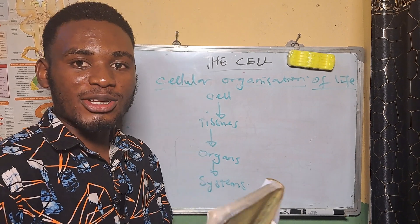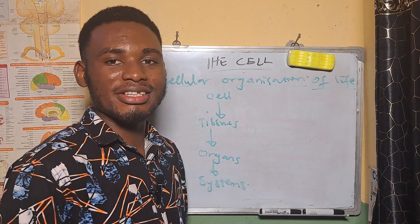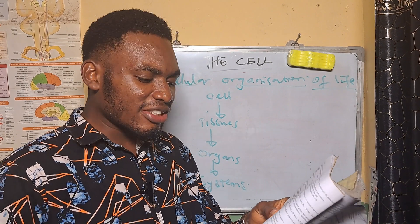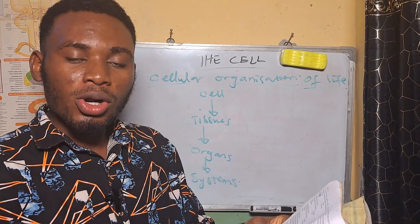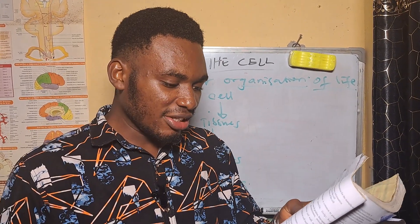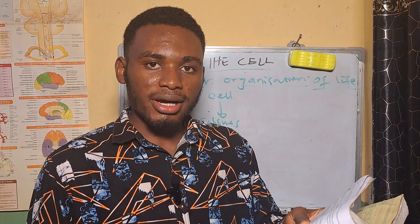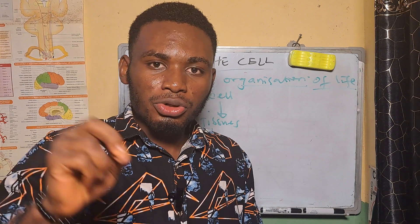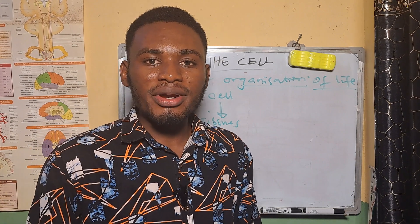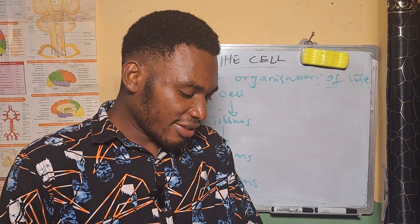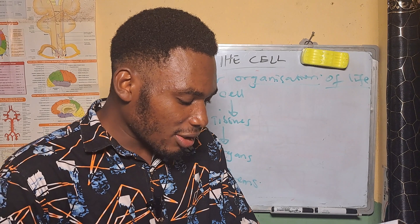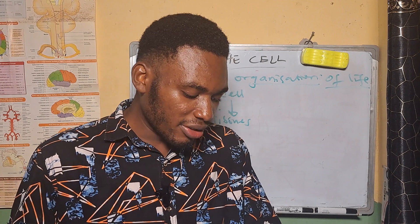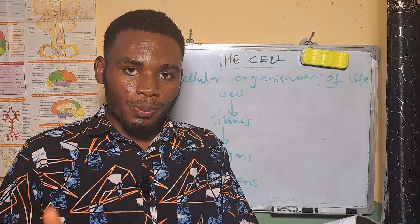We'll now solve some JAMB past questions to test what we covered in this tutorial. A 2009 question says: 'In a cell, the genes are carried by: A) nuclear membrane, B) lysosome, C) chromatin thread, D) mitochondria.' The answer is the chromatin thread, because the chromatin thread is found in the nucleus, and the nucleus carries the genetic material of a cell. Another question says: 'The membrane surrounding the vacuole in a plant cell is called: A) plasmalemma, B) tonoplast, C) nuclear membrane, D) endoplasmic reticulum.' The answer is tonoplast, as the tonoplast lines the cell vacuole in the plant cell.